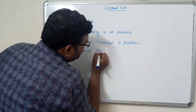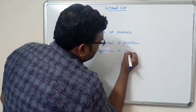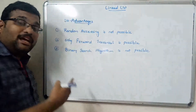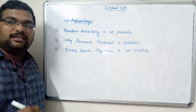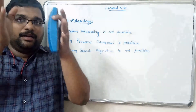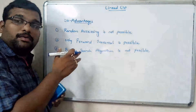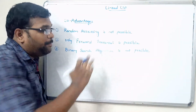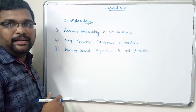Another disadvantage is that the binary search algorithm is not possible on a single linked list. Binary search works by reducing the search space based on a middle element using index values, but since there are no index values in a linked list, binary search cannot be applied.